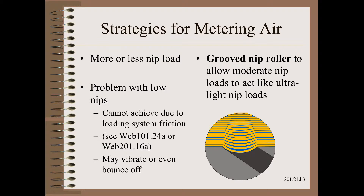The normal strategy for metering more or less air is by using more or less nip load. However, if you desire loose or really loose winding, you might not get there with pure tension because it is insufficient. On the other hand, the lightest controllable nip may be too much. There are many reasons that ultra-low nip loads might not work in the real world.